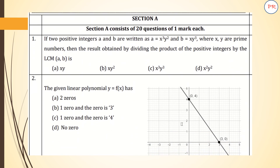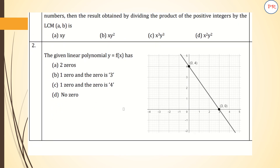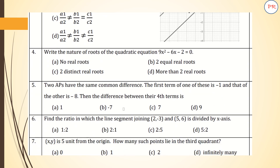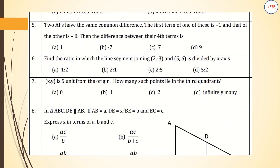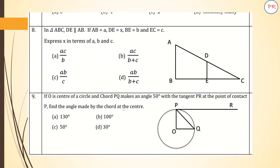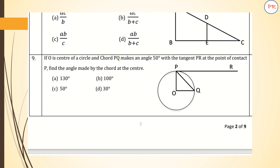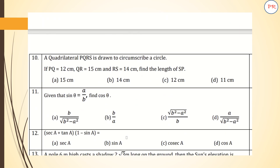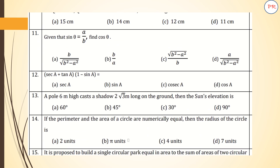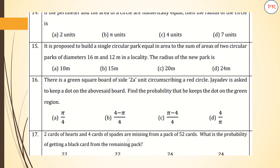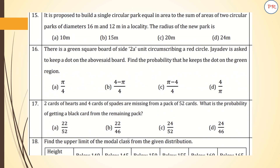Now let us see what is given section-wise. Section A contains 20 multiple choice questions, 1 mark each. Every chapter has a question here: they ask about LCM, then polynomials, linear equations with one variable, quadratic equations, arithmetic progressions, similarity of triangles, circles in question 9, quadrilaterals in question 10, and questions 11, 12, and 13 are from trigonometry. Like that, a question from each and every chapter will be asked.